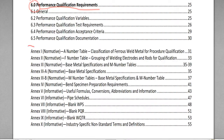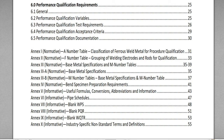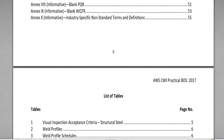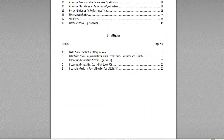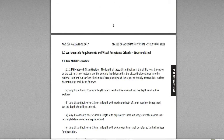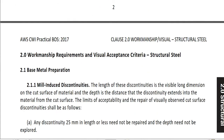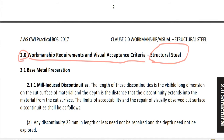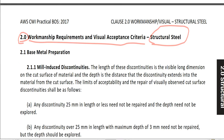We also have appendices one through ten, but these are references. Today I'm going to give you a lecture on Part B, Chapter two — Workmanship Requirements and Visual Acceptance Criteria for Structural Steel. Let's start.